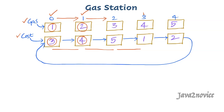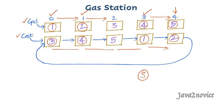Now let's say we are starting from index 3. We need 1 unit of gas to travel from here to here. Luckily we have 4 units available, so we can easily reach from index 3 to index 4. After reaching index 4 we are left with 3 units of balance gas. We need 2 units to travel from here to here. Since 5 units of gas are available, we can easily travel from index 4 to index 0. After moving here, the total balance is 6 units.